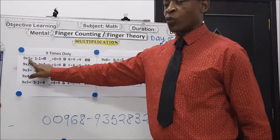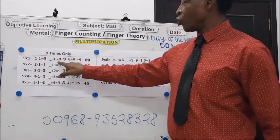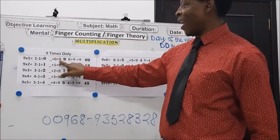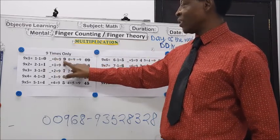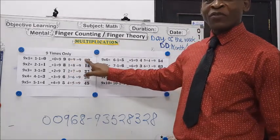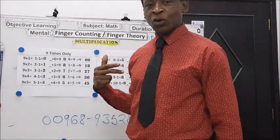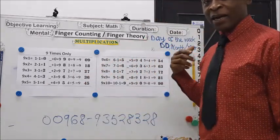1 minus 1 is 0. What number should we add to 0 and we get 9? The number is 9. So we have 0 and then 9. If you have 2 times 9, move back a step.